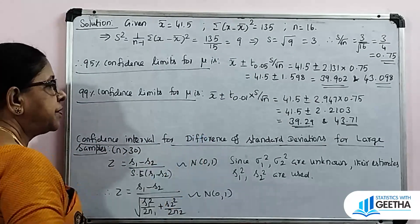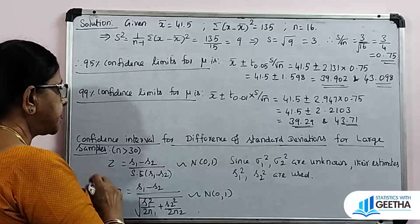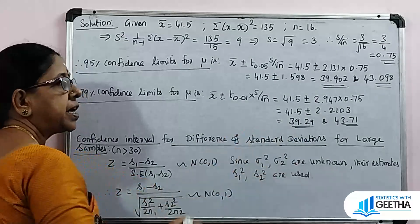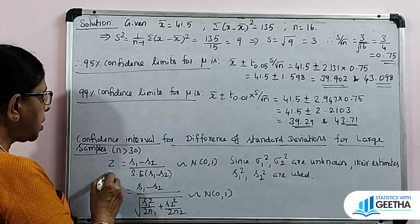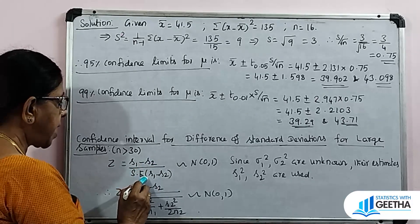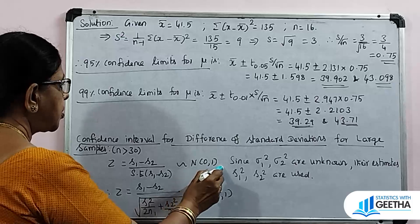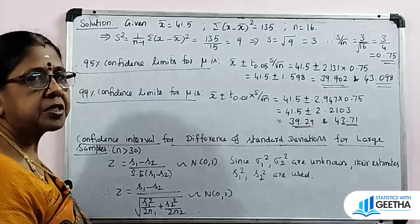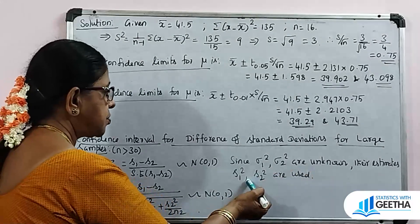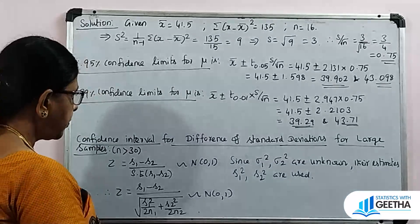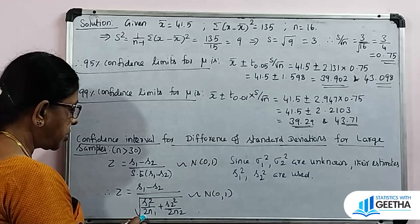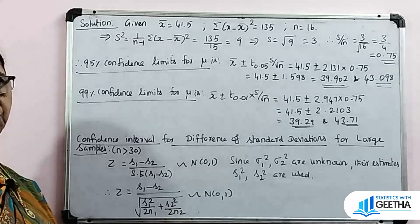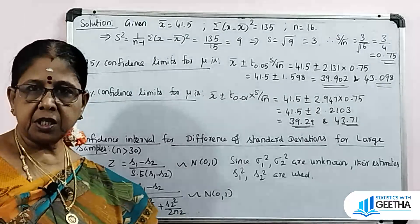Confidence interval for difference of standard deviations for large samples, where n is greater than 30. The confidence limits for the difference between standard deviations of two populations use Z equal to (s1 minus s2) divided by the standard deviation of (s1 minus s2), which follows Normal(0,1). When sigma1² and sigma2² are unknown, estimates s1² and s2² are used. The formula becomes Z equal to (s1 minus s2) divided by root of (s1²/2N1 plus s2²/2N2), following normal distribution with mean 0 and variance 1.